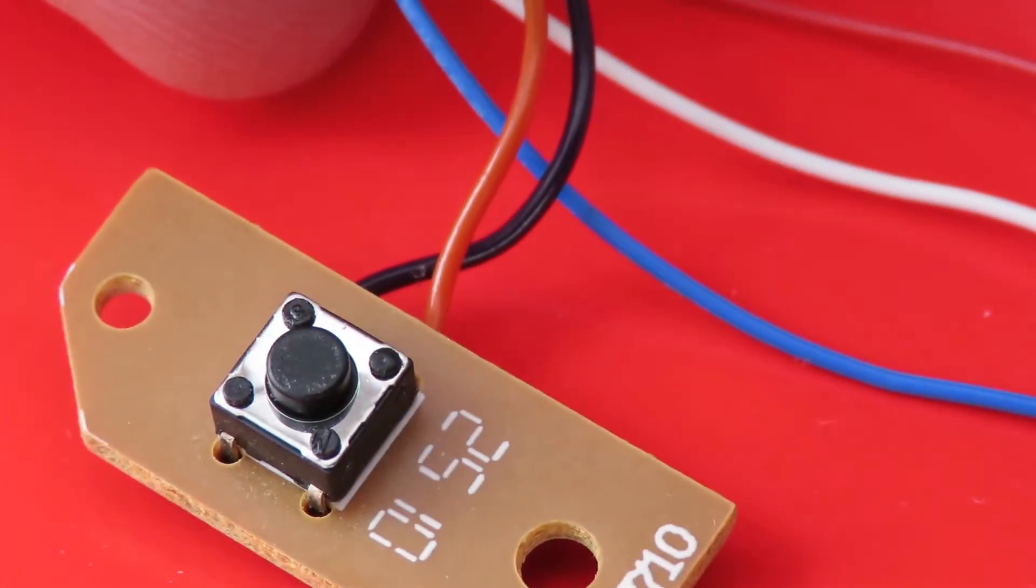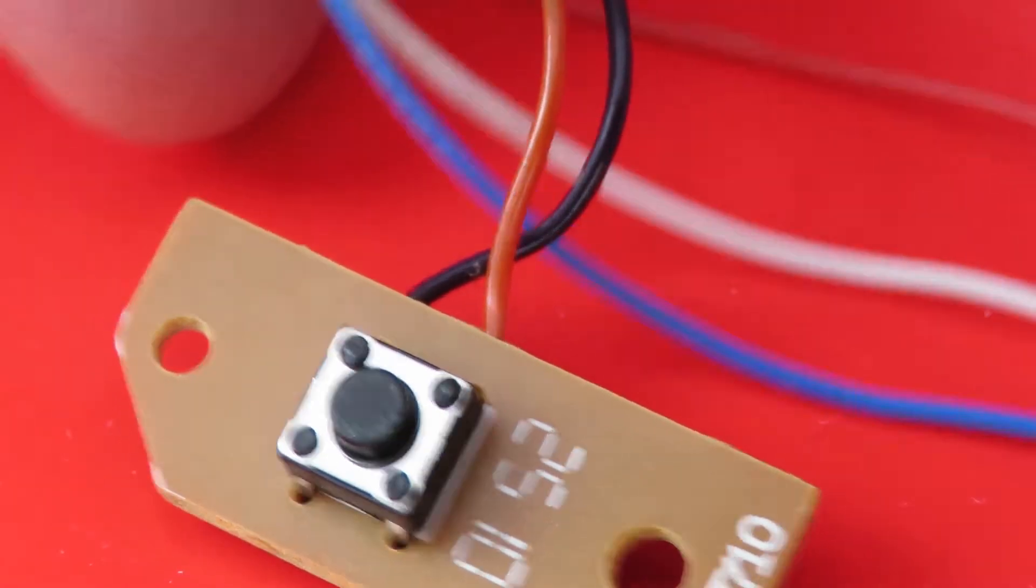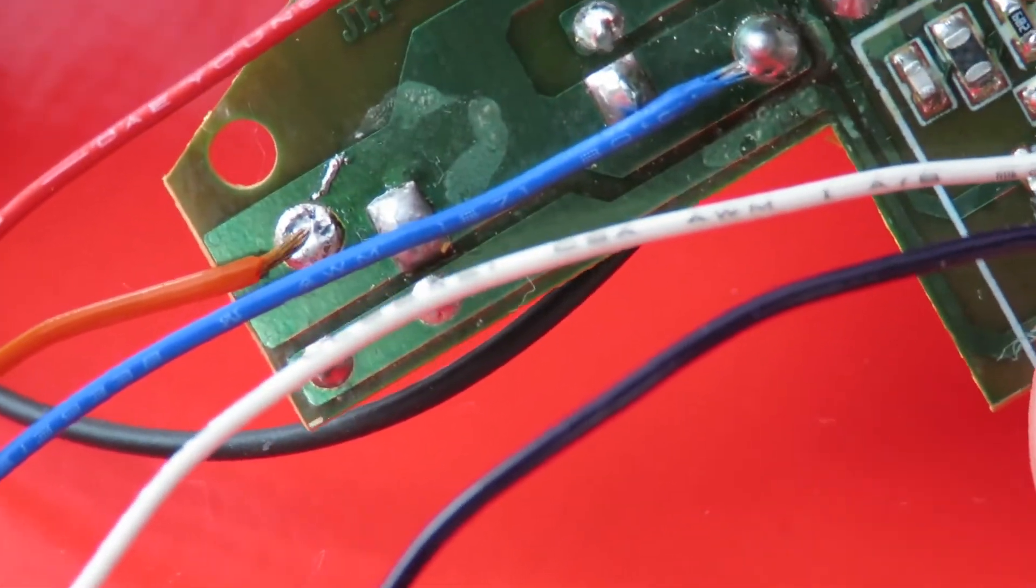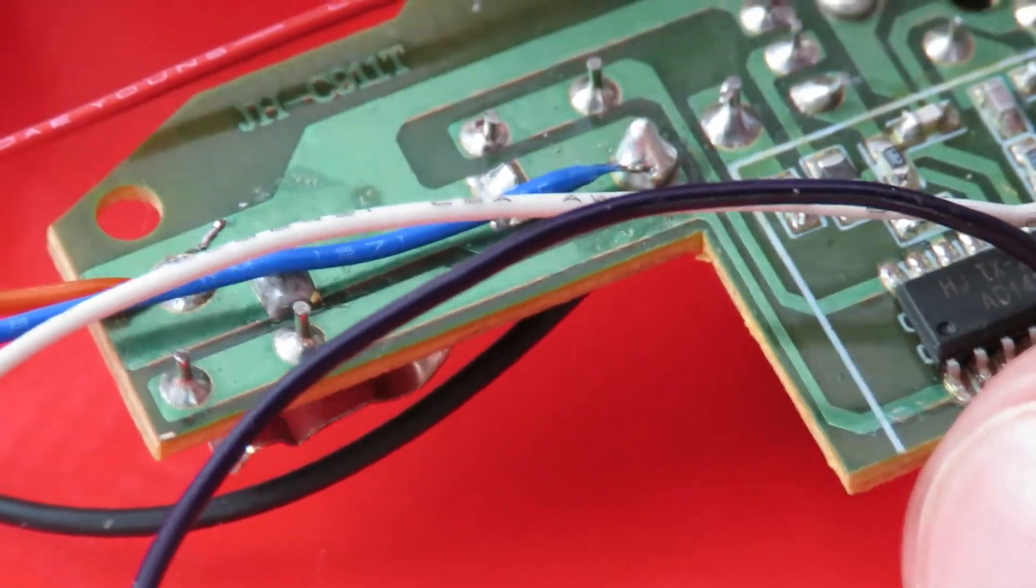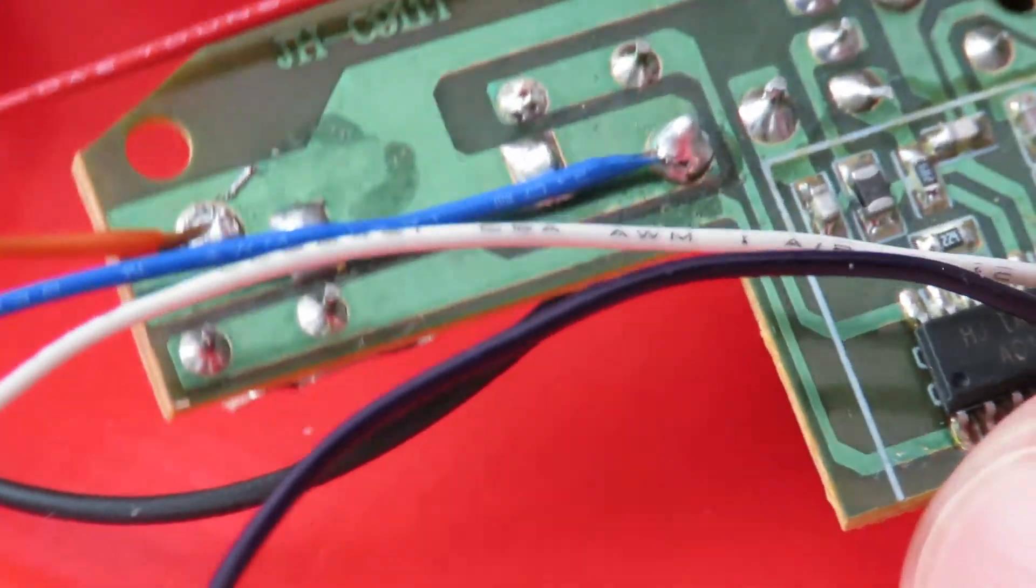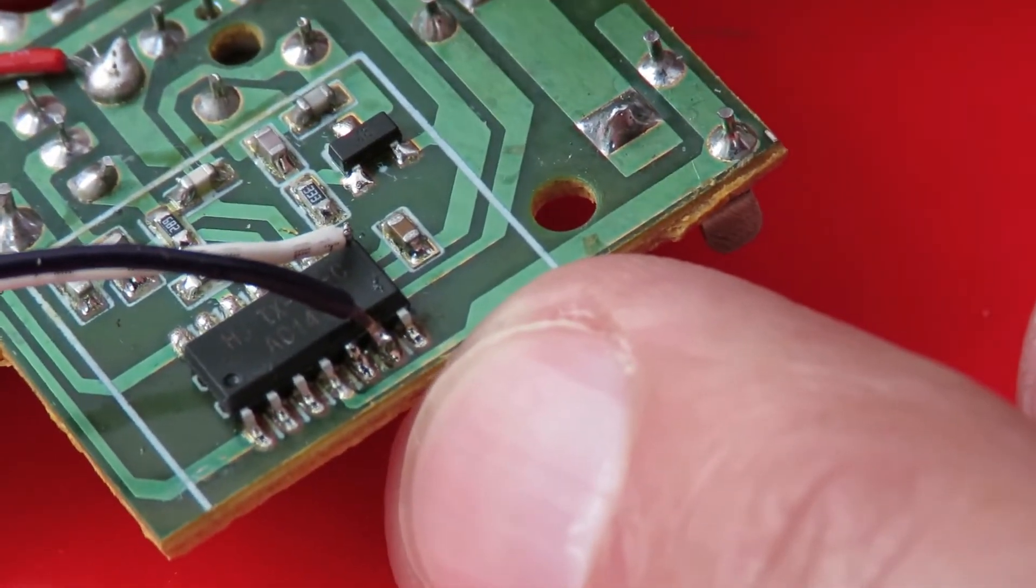That black wire goes through that little button, just a spare button I had laying around - a momentary push switch. And then that goes onto that orange wire, and the orange wire I've just got soldered onto the negative bar. So that's just so that I can push negative when I press that button. That goes directly into pin 6 there.